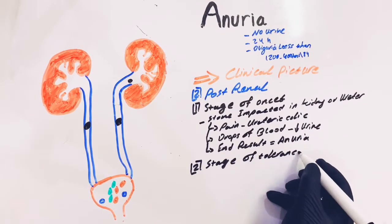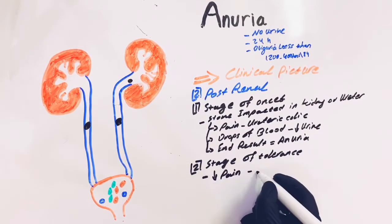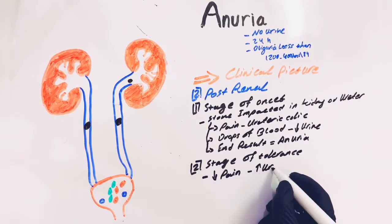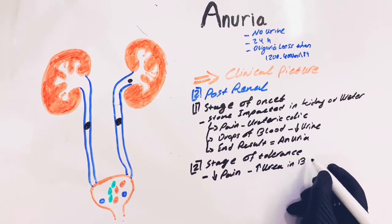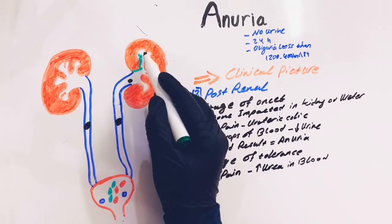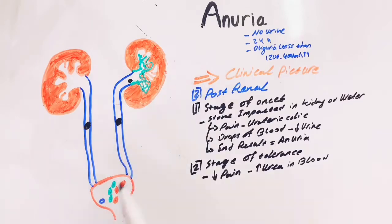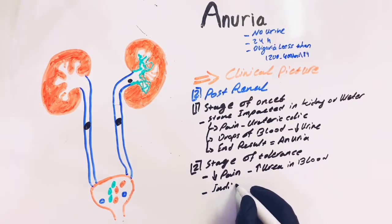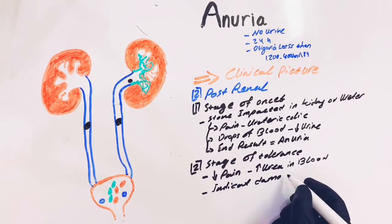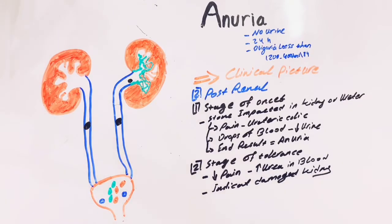The second stage is the stage of tolerance. In this stage, the pain decreases and there is a significant increase in blood urea, which indicates destruction of the kidney. The third stage is the manifestation of uremia.